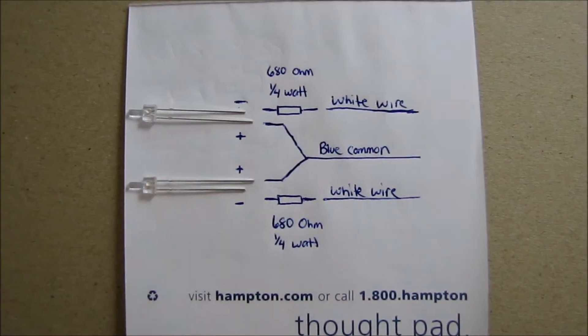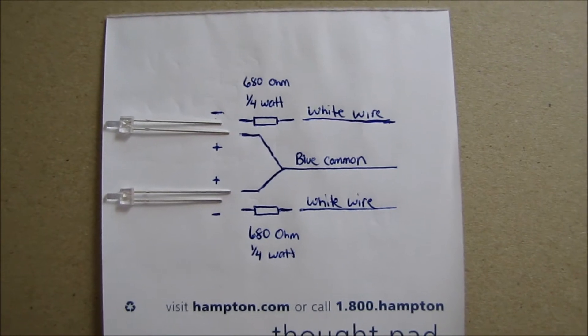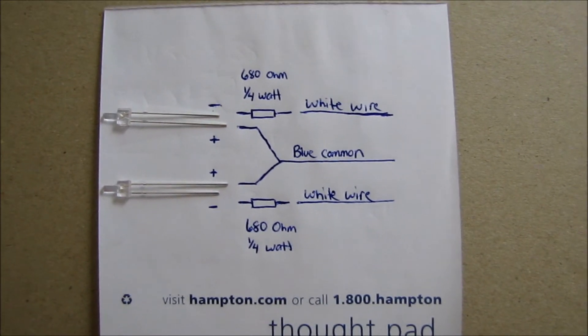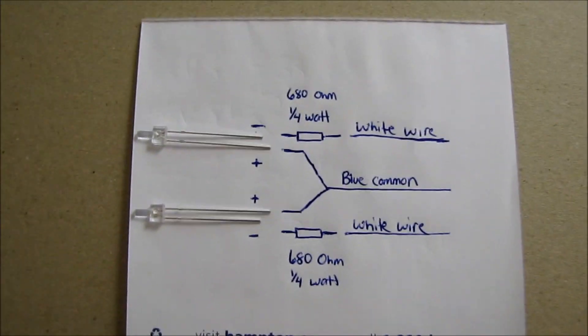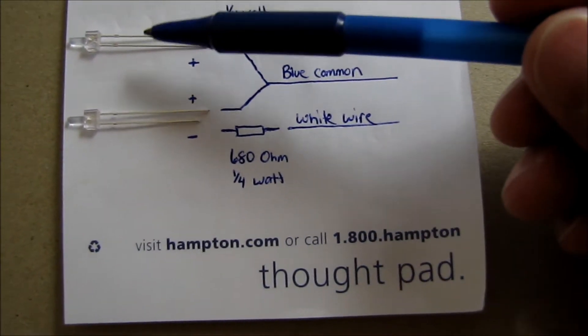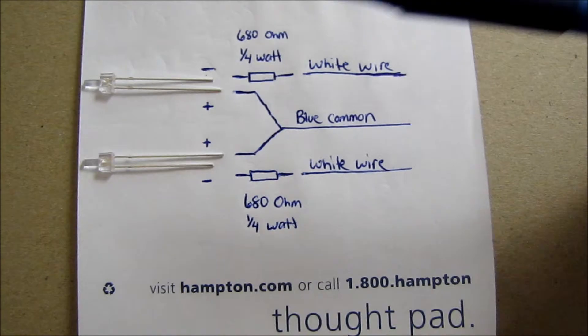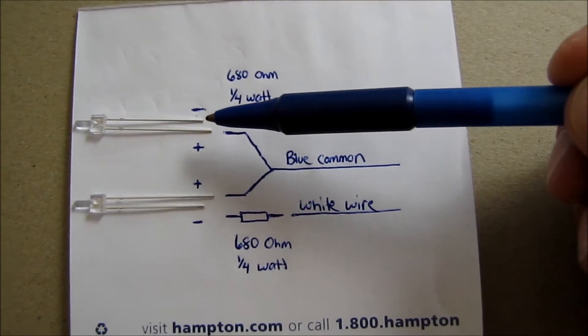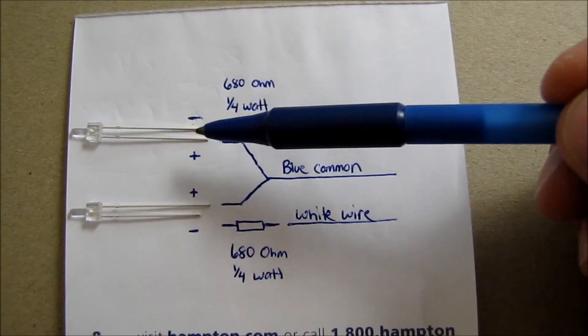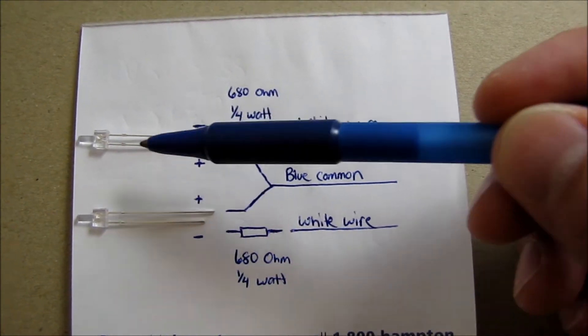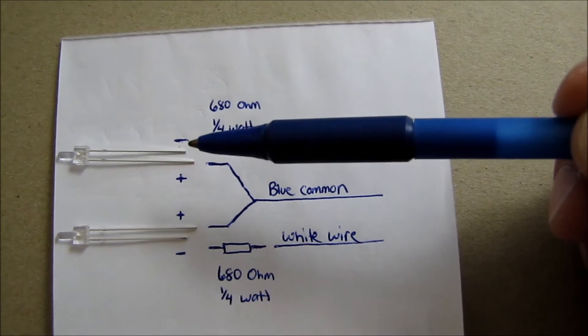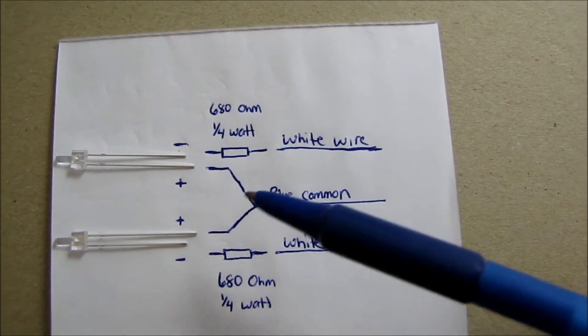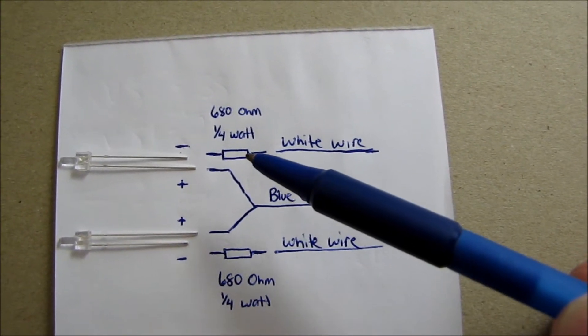Before we get started, I'll give you a little diagram to show you exactly what we're going to be doing with the LEDs. As you can see, I've got the two LEDs that we're installing in the front. The short lead coming off the LED is always negative and the long one is always positive.